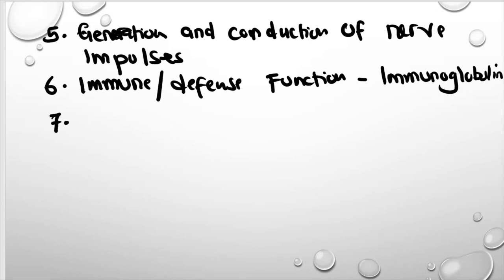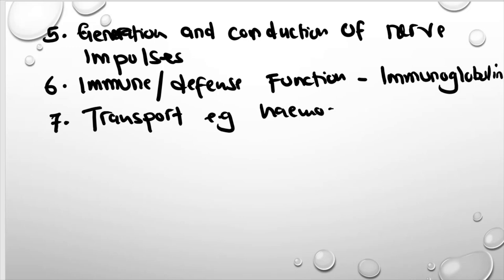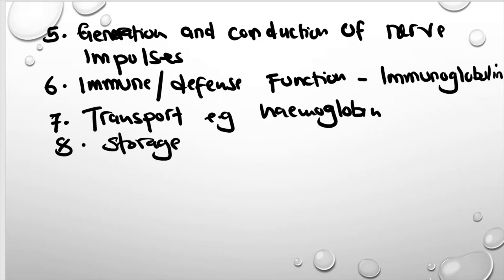Number seven, proteins are used for transport. For example, hemoglobin is a protein that transports gases. Number eight, they are used for storage. Number nine, some proteins are hormones. Those are some of the functions of proteins in the body.